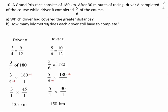Then they're asking for part B, how many kilometers does each driver still have to complete? There's a couple of ways we can do this. I think the easiest is, I've just calculated how far driver A has gone. So driver A has gone 135 kilometers, that means driver A has 180 minus 135, which is 45 kilometers left to go.